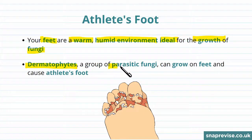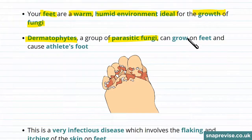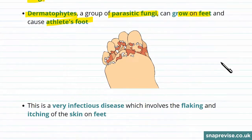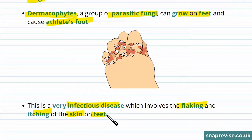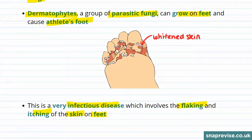Dermatophytes, which are a group of parasitic fungi, can grow on feet and cause Athlete's Foot. Athlete's Foot is highly infectious and involves the flaking and itching on the skin on feet. One of the symptoms is having whitened skin or skin that cracks or peels easily.